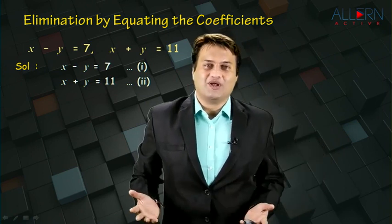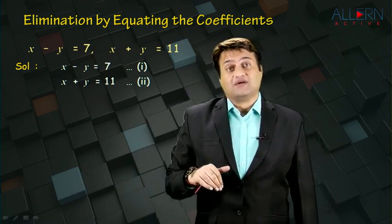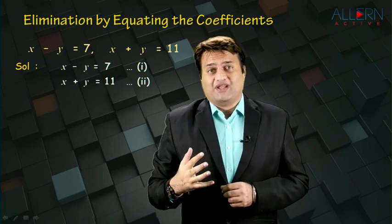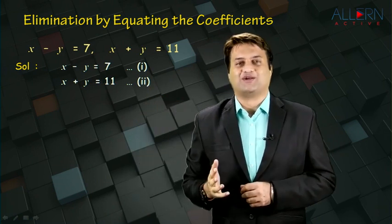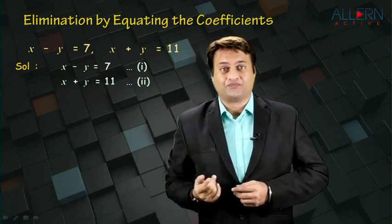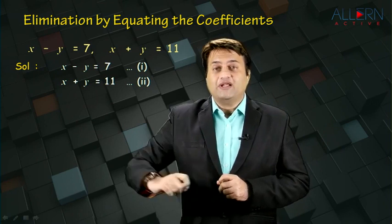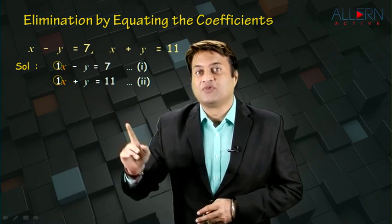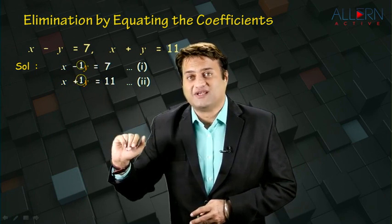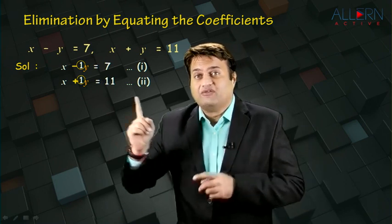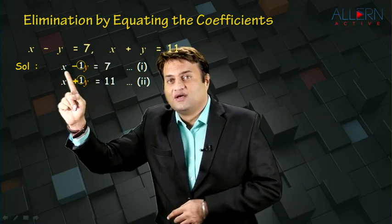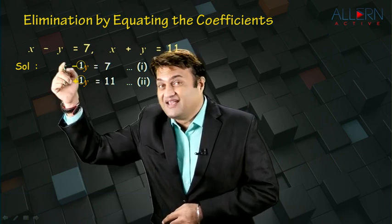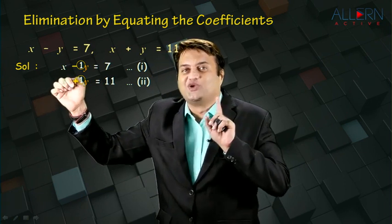If the coefficients are not equal, make them equal. Now, the question is how to eliminate — by adding the two equations or by subtracting them. To eliminate a variable, we need to check the signs of that variable. Look at the coefficients of x — the coefficients are the same, so we can eliminate x. The signs of x are both plus, and whenever the signs are the same, we need to subtract the two equations. Remember this.